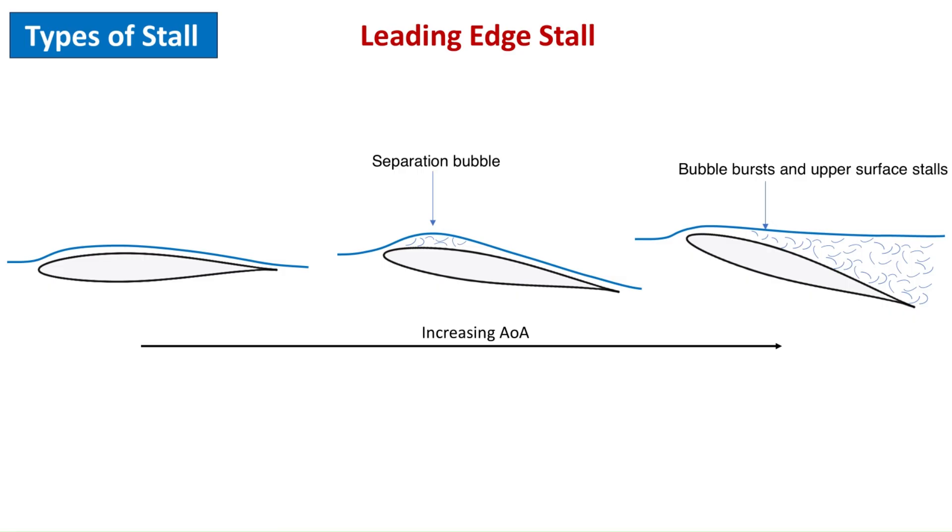Leading edge stall: In this type, the flow separation starts at the leading edge and moves back towards the trailing edge. As the angle of attack increases, a small separated flow bubble develops near the leading edge of the airfoil.